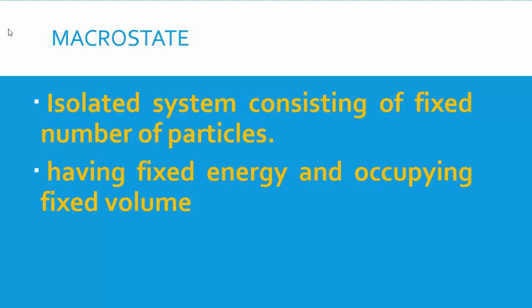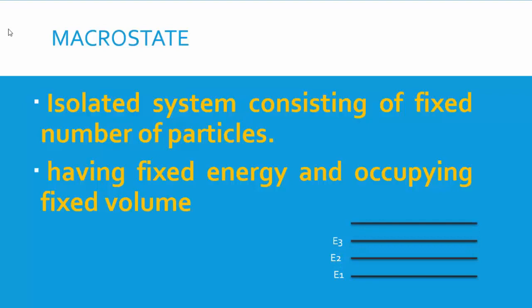For macrostate: in a system or container you have a large number of particles, and these particles will have different energy levels. The particle occupies a fixed volume. So when you have the number of particles enclosed in a container having fixed volume and fixed number of energy levels where the particles are distributed, that information is called macrostate.